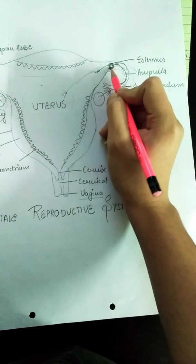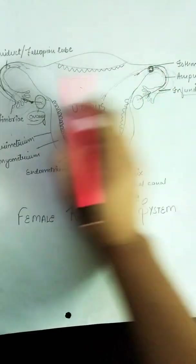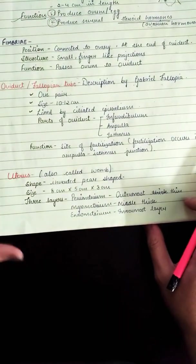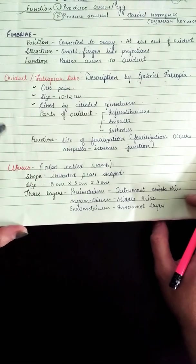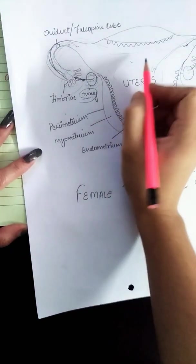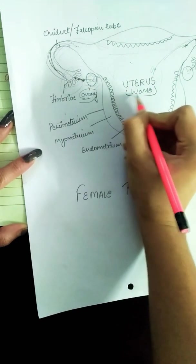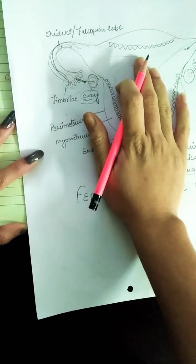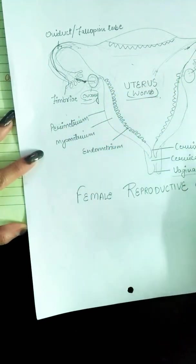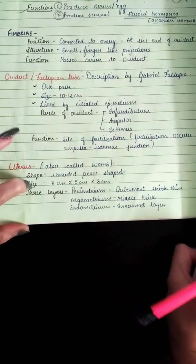Fertilization occurs here. Next comes the uterus, also called the womb. It is called the womb because the baby rests here for nine months. Its shape is that of an inverted pear.